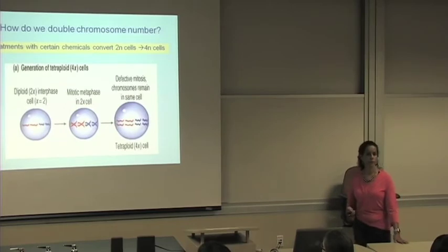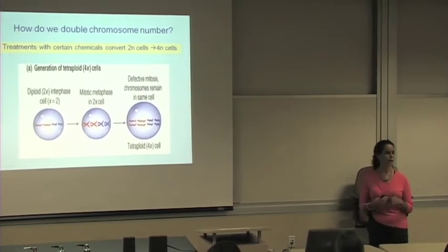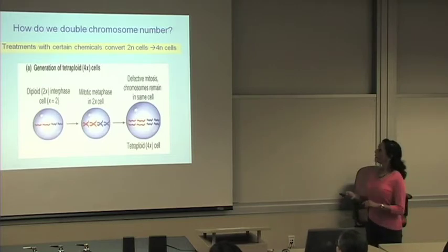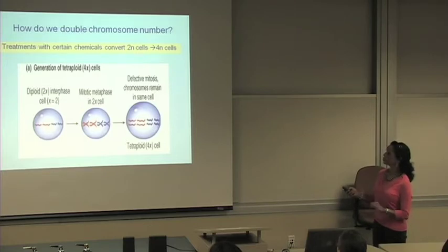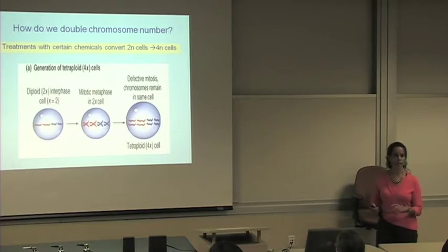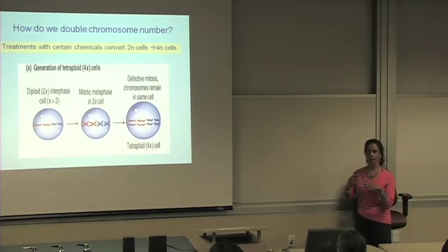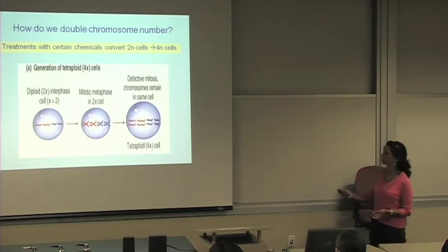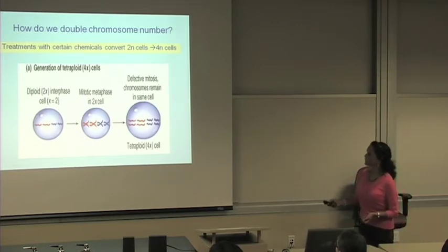Now, how do we double the chromosome number? So far, I have mentioned that this occurs naturally through evolution, but we can also induce it. And we can induce it using certain chemicals. And these chemicals are going to affect the plant at the cellular level. So two N cells are going to be converted into four N cells. And of course, once the cells increase in ploidy, we can generate the whole plant and we have a whole plant or parts of the plant that are tetraploid.